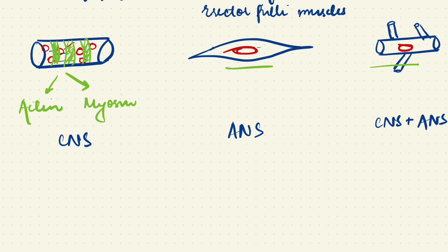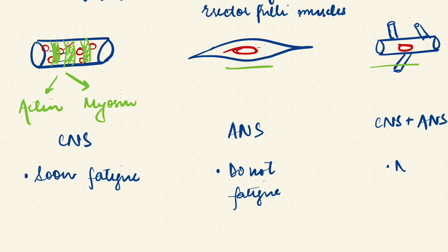An important point is about fatigue — the tiredness of these muscles. Skeletal muscles of your arms and legs do get fatigued — they soon acquire fatigue. Smooth muscles of your internal organs do not get fatigued. Cardiac muscles never get fatigued, because if the cardiac muscles get fatigued, the life of the person is over.